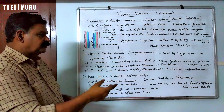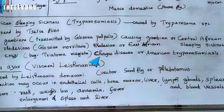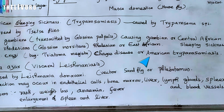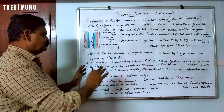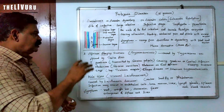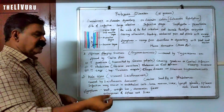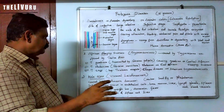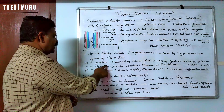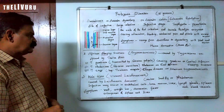African sleeping sickness is also associated with Chagas disease, which is called American trypanosomiasis. There are three types involving Trypanosoma species transmitted by tsetse flies. The three types are: Trypanosoma gambiense, Trypanosoma rhodesiense, and Trypanosoma cruzi.